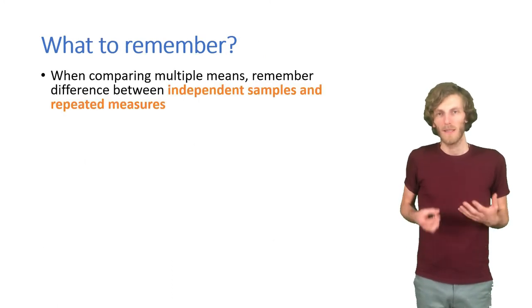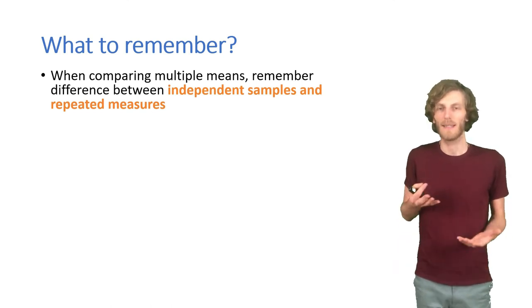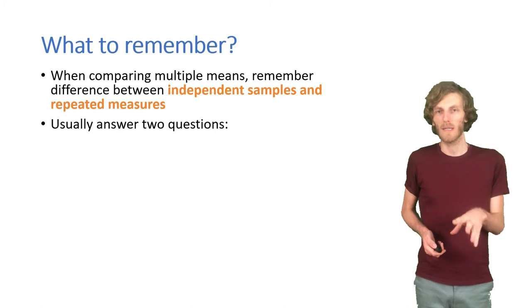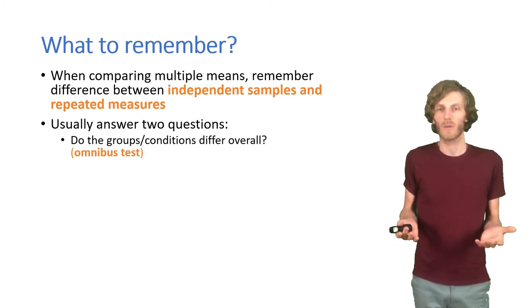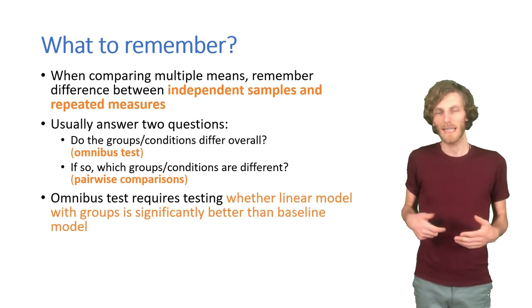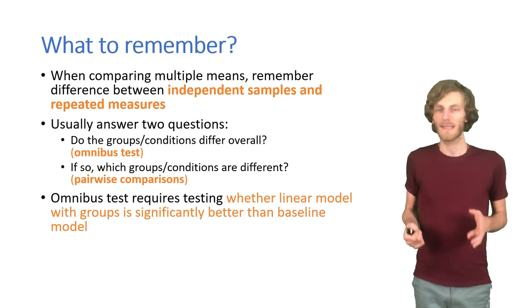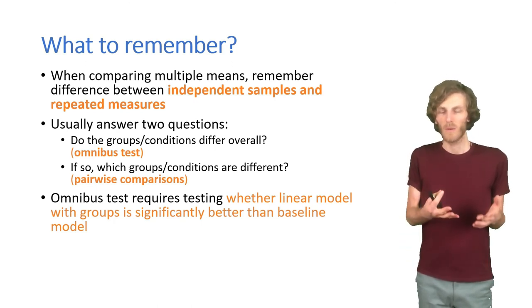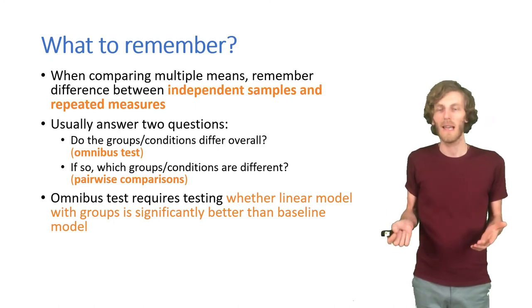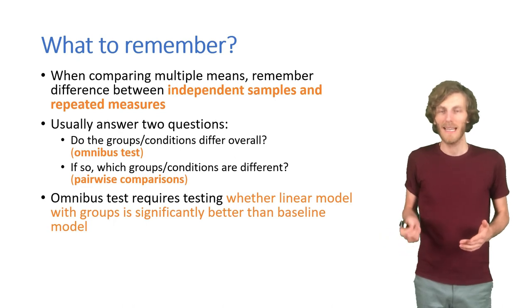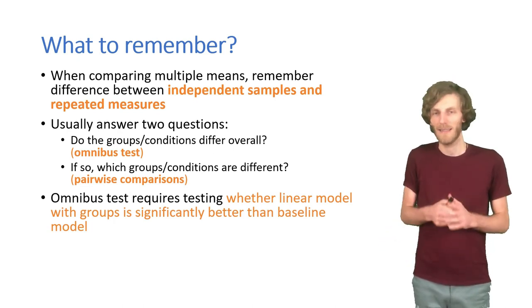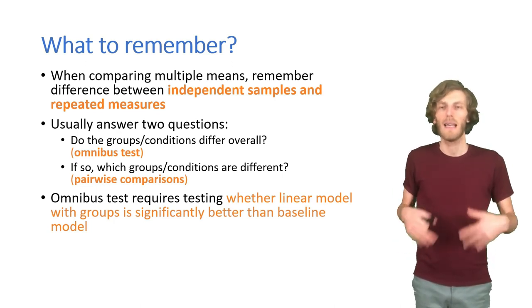So, what to remember. To compare multiple means we need to think about whether the design is independent samples or repeated measures. And then we usually need to answer two different questions. One question is, does this group factor that I have make a difference overall? That's the so-called omnibus test. If it does, then which of the conditions are different? And that's where we run pairwise comparisons. We don't always run all of them. In some cases, we really shouldn't. So, we might ask, does the level of religious belief depend on the country in the European Social Survey? In that case, we would really want to think in advance about which pairwise comparisons we're interested in. Because if we run all of them, we're just very unlikely to find significant results among all the noise.